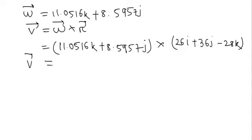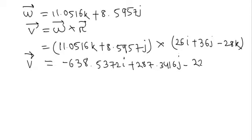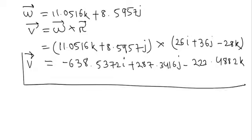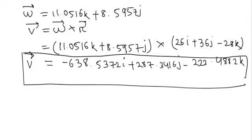We will get V vector is equal to minus 638.5372i plus 287.3416j minus 223.4882k. This is the value of V and the unit is inches per second.